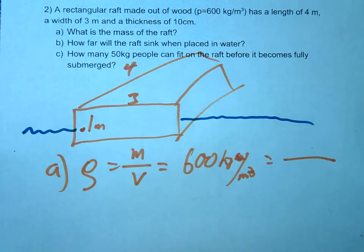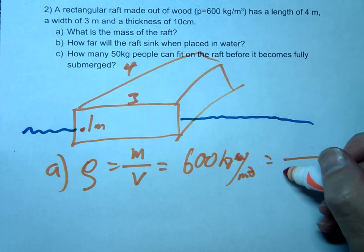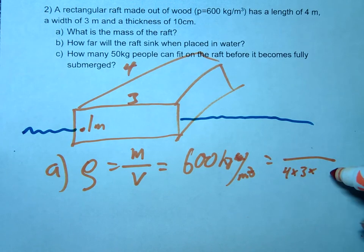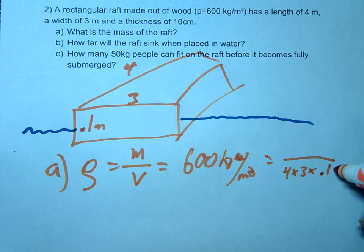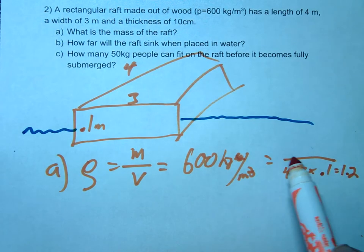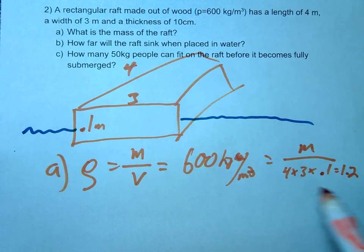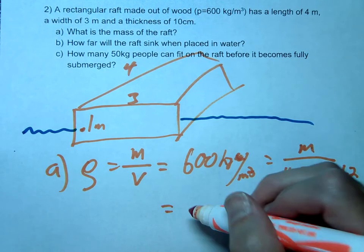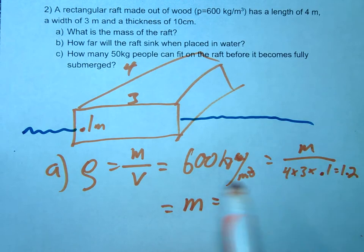So that's just going to be length times width times height. So it's 1.2 and then we'll just find our mass. So we solve that, we're gonna get a mass of 600 times 1.2, that's 720.